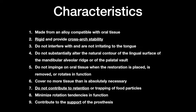In the textbook, nine different characteristics are given for the Major Connector. First, it should be made from an alloy compatible with oral tissue. Second, it should be rigid and provide cross-arch stability. Characteristics three through six address not disturbing or interfering with the oral environment — including the tongue, soft tissue, ridge, or palatal vault. Seventh, the Major Connector should not contribute to retention or trapping of food particles; only the direct retainer provides retention. Eighth, it should minimize rotation tendencies in function. The ninth is to contribute to the support of the prosthesis.